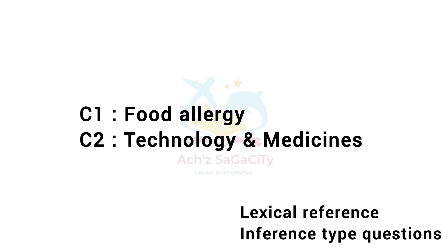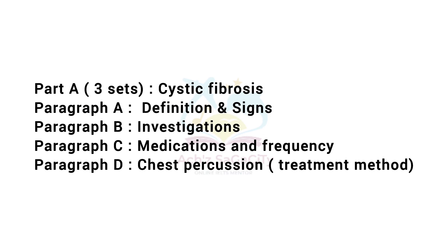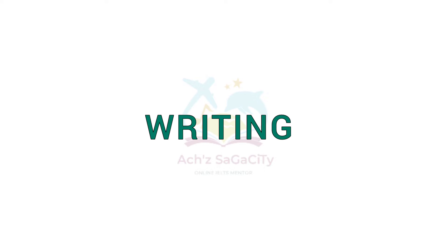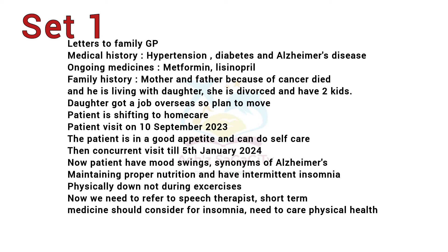In the third set, Part A was about cystic fibrosis. Paragraph A included definition and signs, Paragraph B investigations, Paragraph C medication and frequency, and Paragraph D chest percussion as a treatment method. C1 and C2 covered itching and stroke. That covers all three sets of the Reading Module.